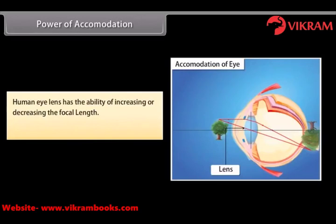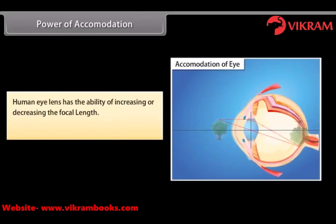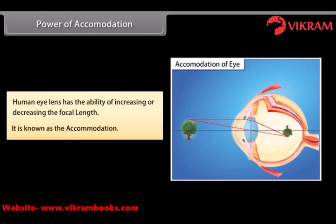Human eye lens has the ability of increasing or decreasing the focal length. It is known as accommodation. Accommodation is achieved with the help of ciliary muscles.